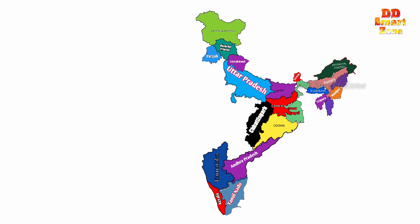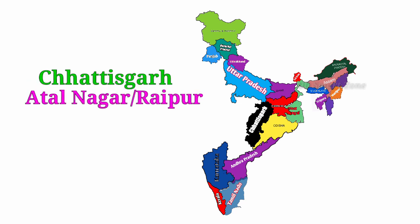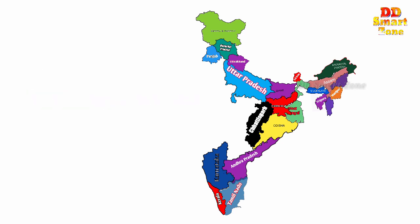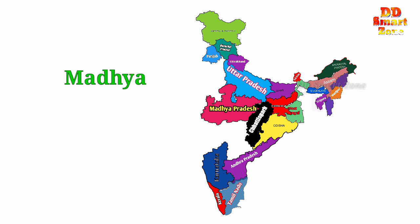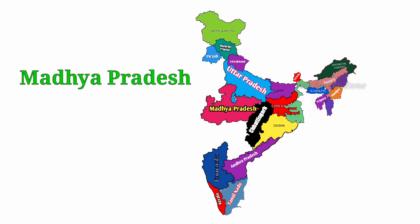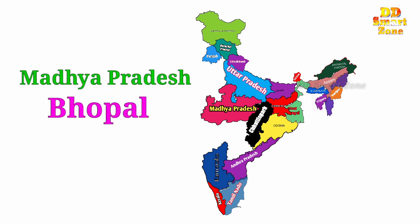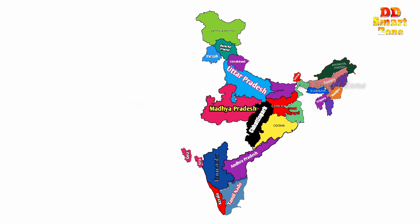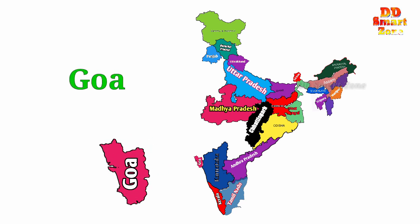State name Chhattisgarh, capital Atal Nagar or Raipur. State name Madhya Pradesh, capital Bhopal. State name Goa, capital Panaji.